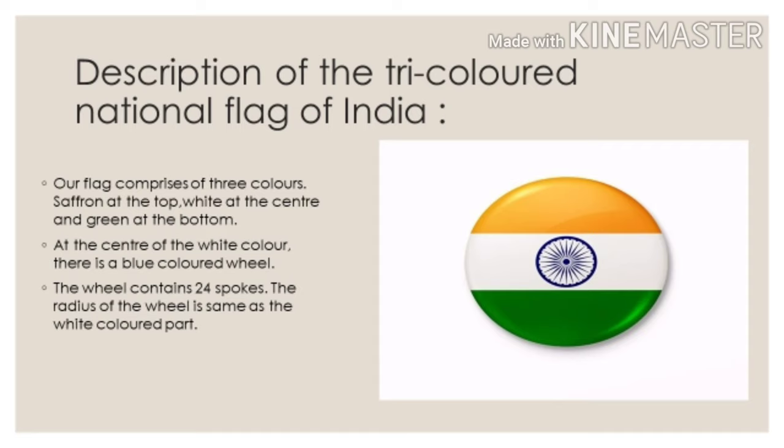The colors of our national flag each have a meaning. The saffron represents selflessness and sacrifice. White color indicates truth, peace and purity. Green color is a symbol of faith, fertility and prosperity — it represents abundant culture and industries. The wheel at the center is a reflection of the wheel engraved in the Ashoka Pillar at Sarnath. The Ashoka wheel is also a symbol of constant movement and progress — it represents that we should always keep moving forward and never stop.